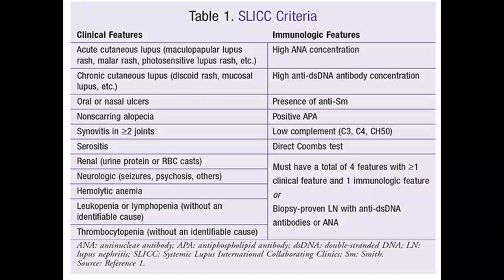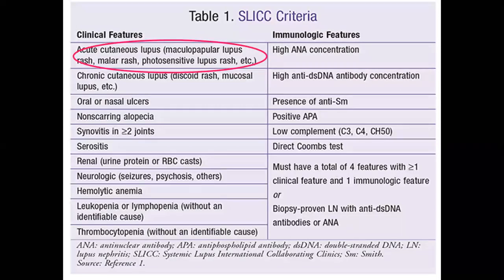The SLIC criteria were postulated in 2012. They are divided into clinical features (11 items) and immunologic features (6 items). Clinical features: First, acute cutaneous lupus — including maculopapular lupus rash, malar rash, photosensitivity — all considered one criterion as they were previously duplicated. Second, chronic cutaneous lupus — discoid rash and mucosal lupus. Third, mucosal or nasal ulcers.